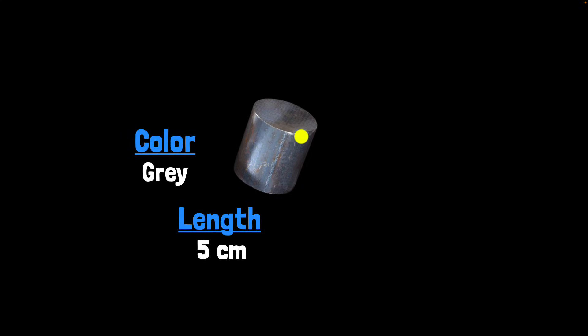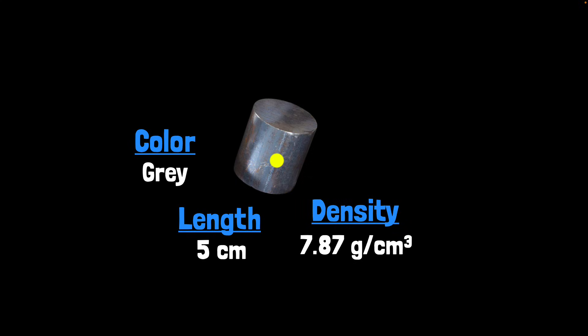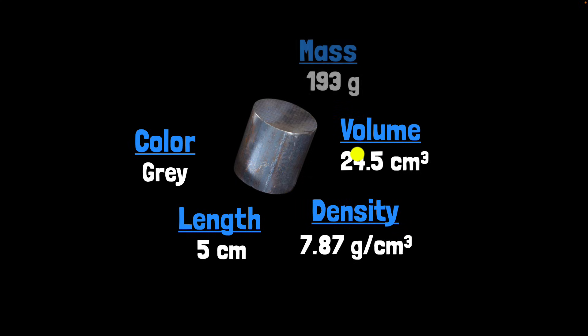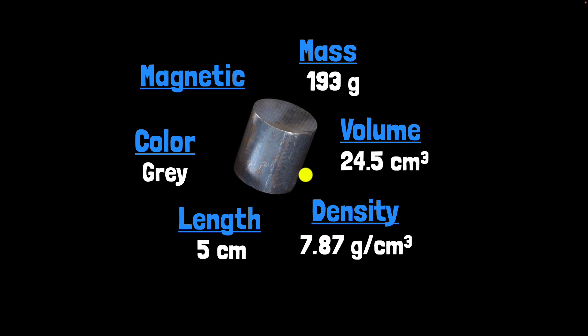Here's a piece of iron. Can you think about some of its physical properties? It has some color — that's a physical property. It has some length — that's a physical property. It has some density. It occupies some space, so it has some volume. It will have some mass. And it's magnetic. So these are some examples of physical properties.